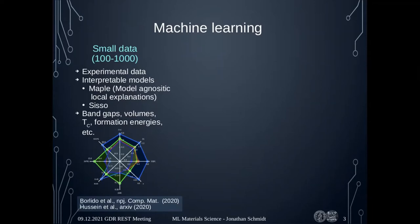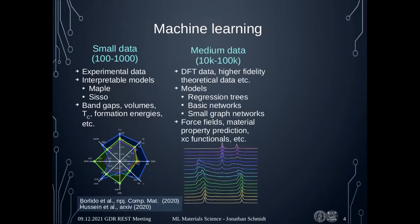Small data methods give you extra certainty in your predictions. Some applications we also worked on include correcting DFT band gaps to be closer to experimental values, or correcting volumes. Other people have worked on formation energies and predicting critical temperatures for superconductors. The most common regime is probably medium data — maybe a few thousand to 100,000 data points — where we really only have theoretical data.